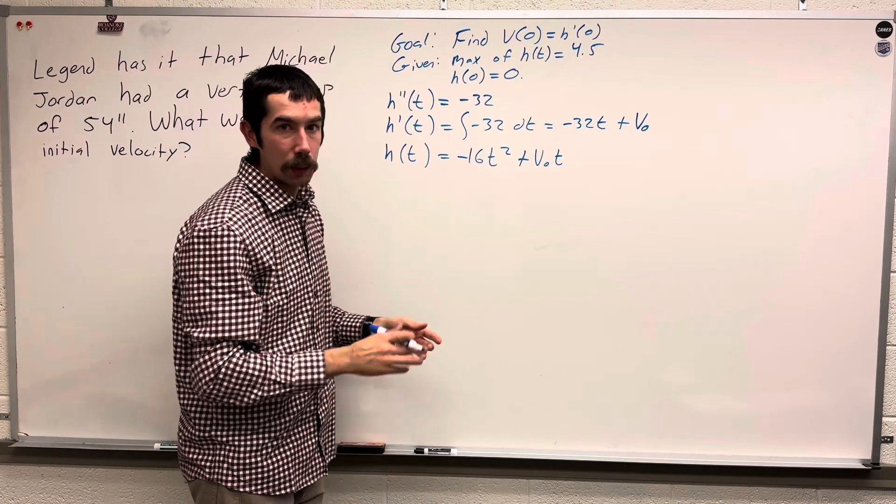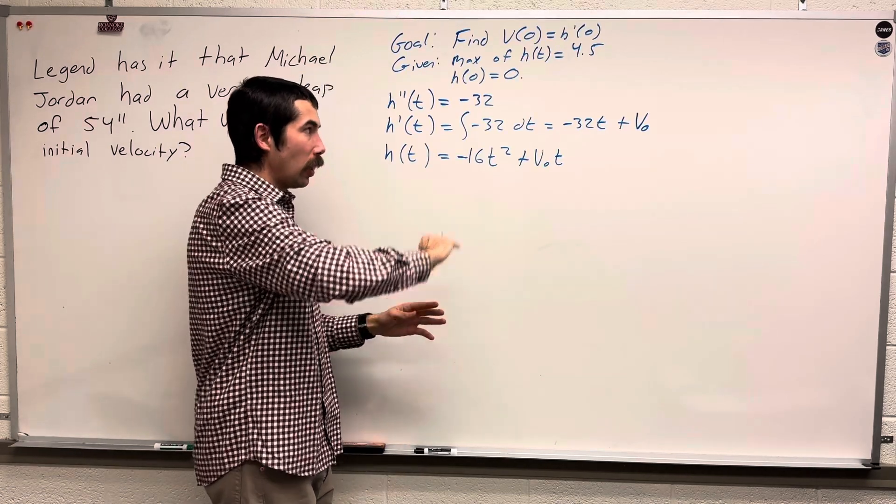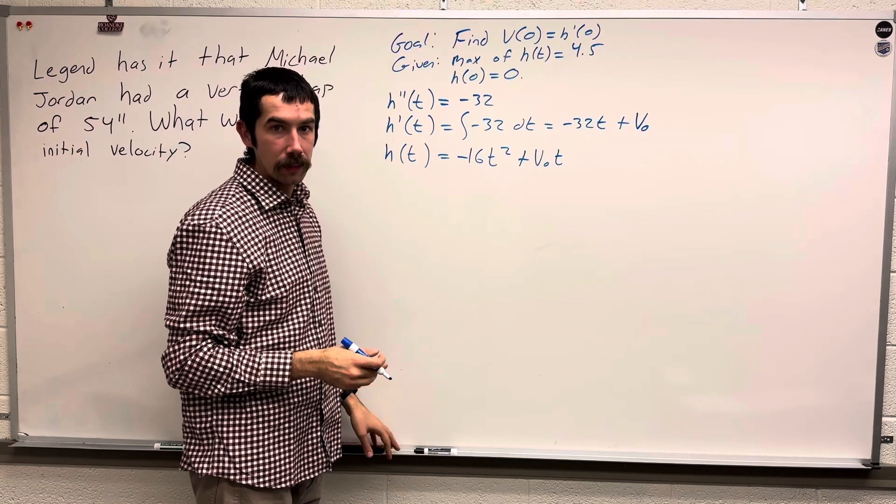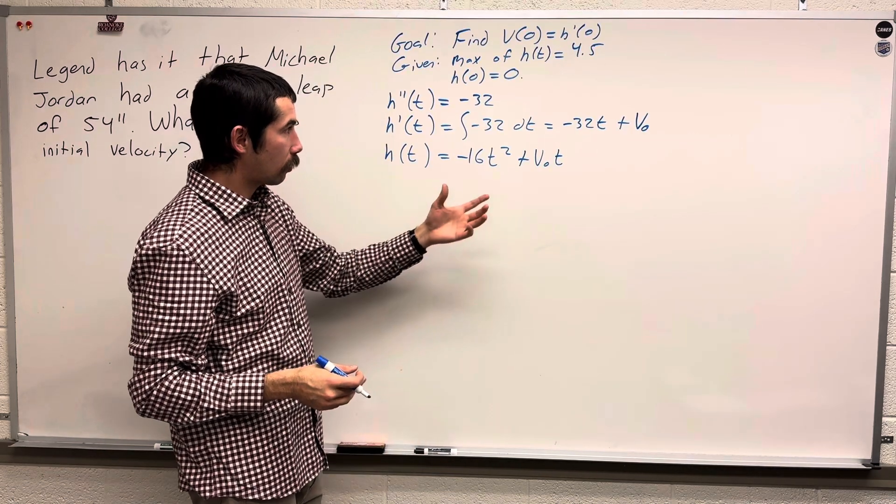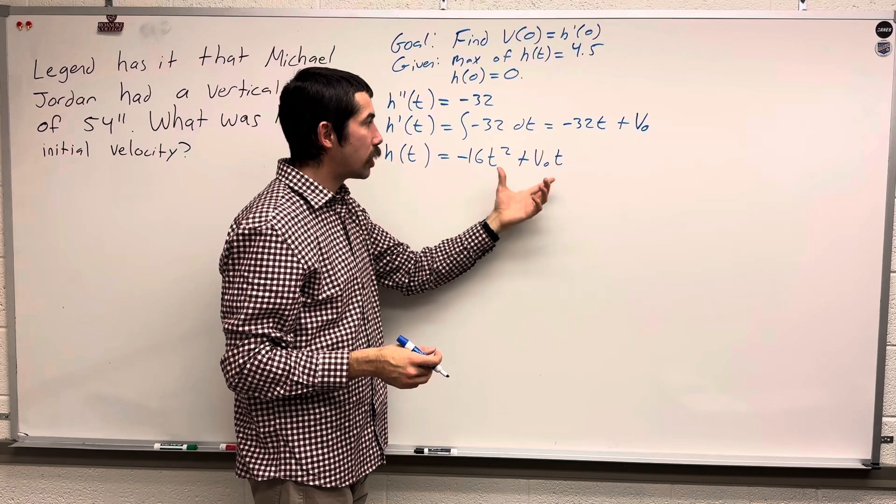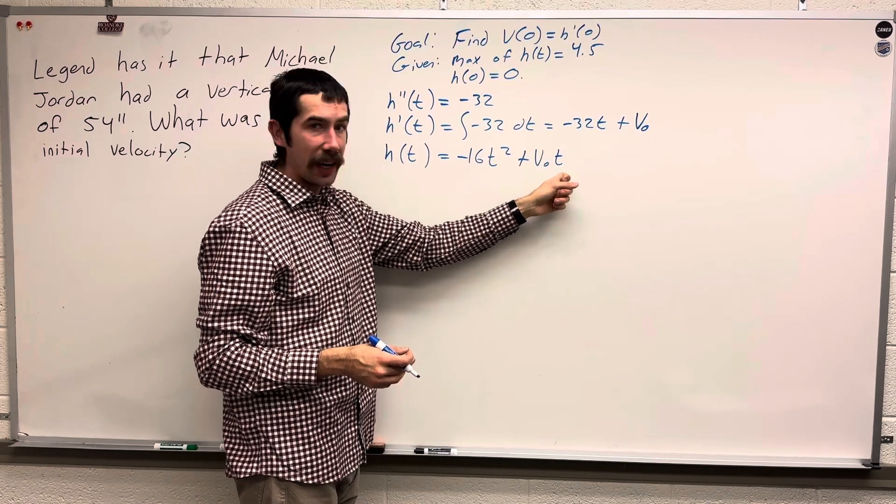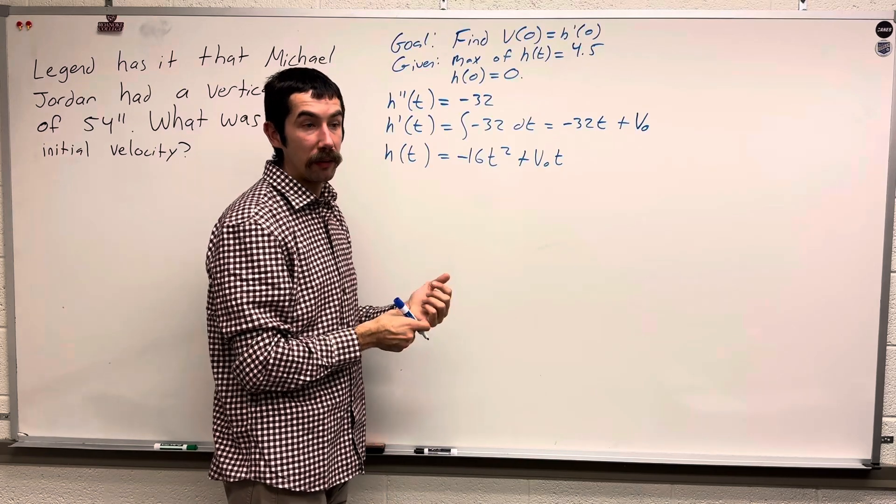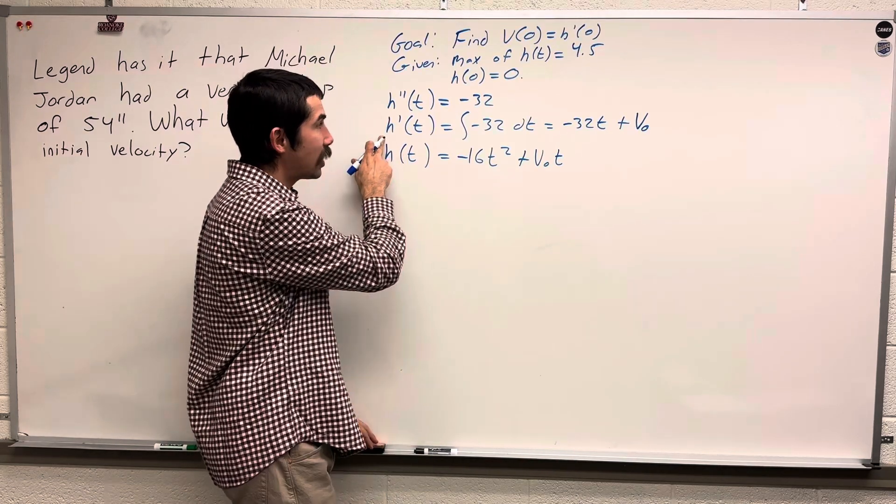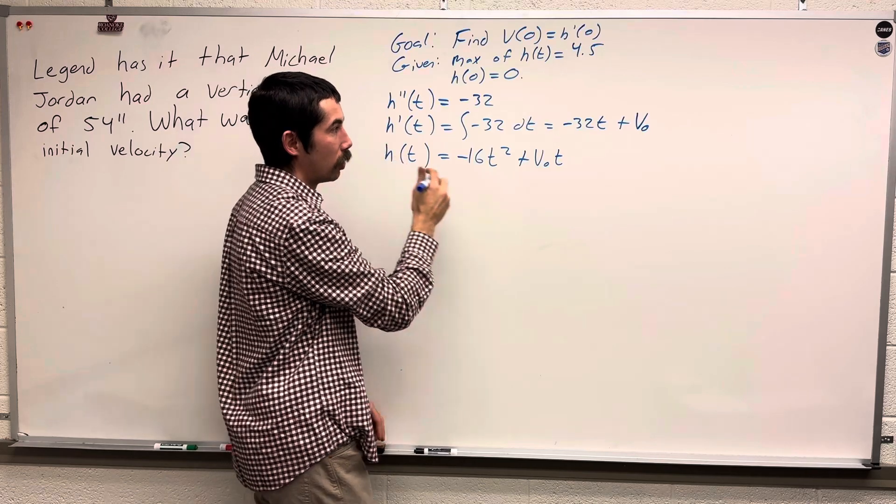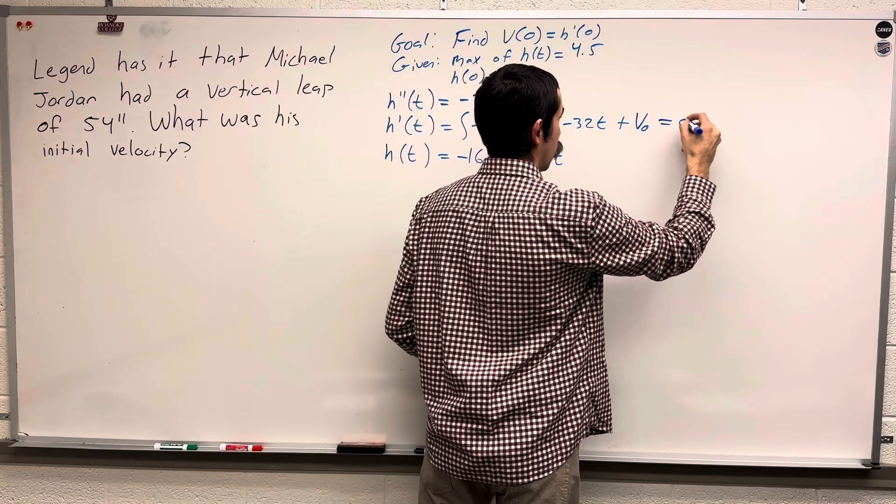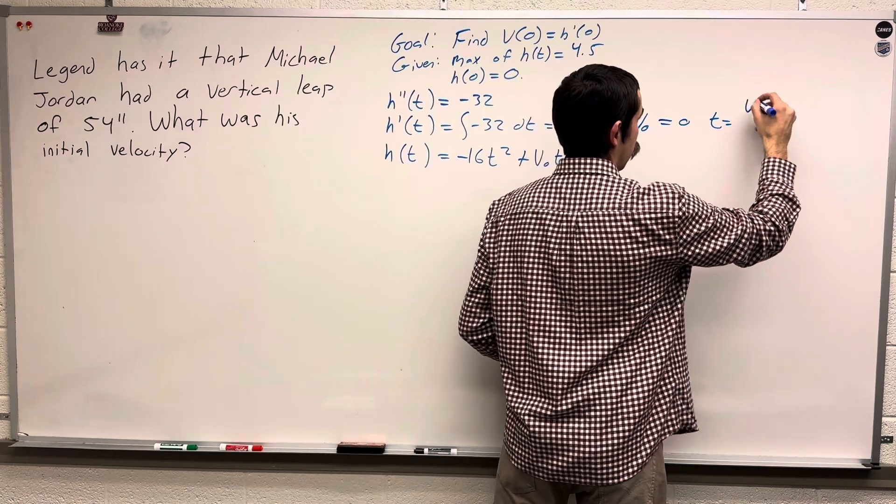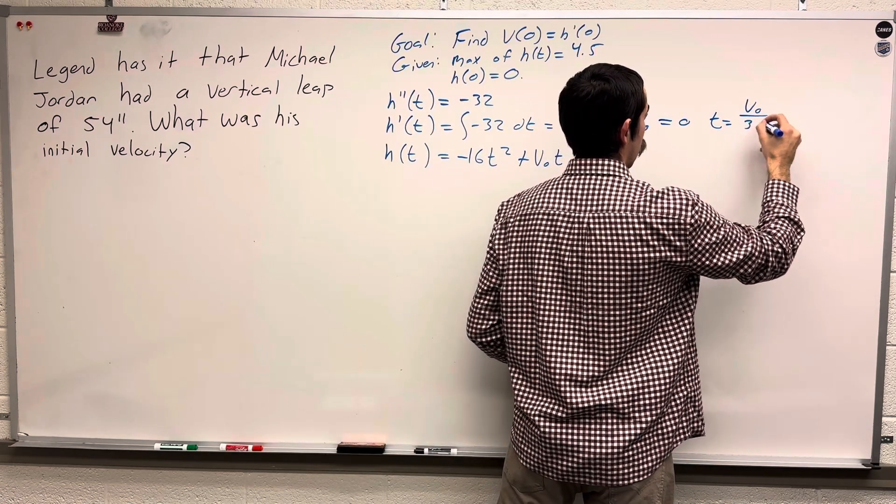So what we want to do is we want to find out at what time does Michael Jordan hit his peak. And using that, we're going to sub that in for t and set our height equal to 4.5 feet. So he hits his peak when our velocity is zero. So that means t is equal to v0 over 32.